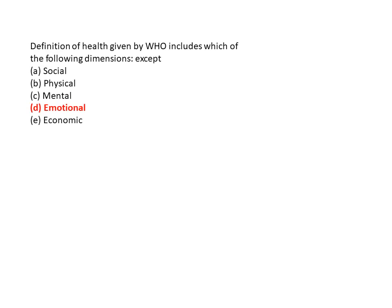Question 1: The definition of health given by WHO includes which of the following dimensions except? Option A is social, B is physical, C is mental, D is emotional, and E is economic. The correct answer is option D — emotional.